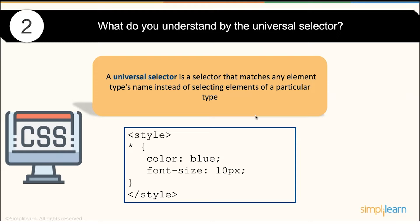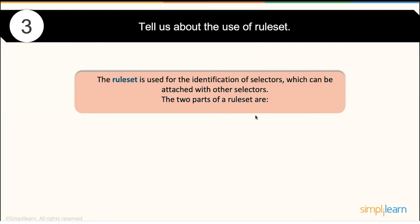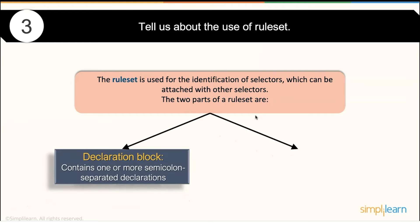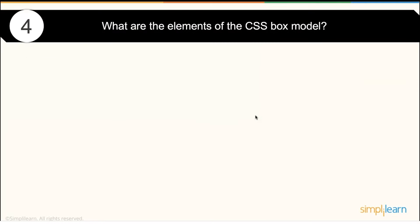Tell us about a rule set. Typically, a rule set is for the identification of a selector which can be attached with other selectors. There are normally two parts to a rule set: the declaration block and the selector. The declaration block contains one or more semicolon-separated declarations — a set of styles — and the selector specifies which particular element the CSS style will be applied to.